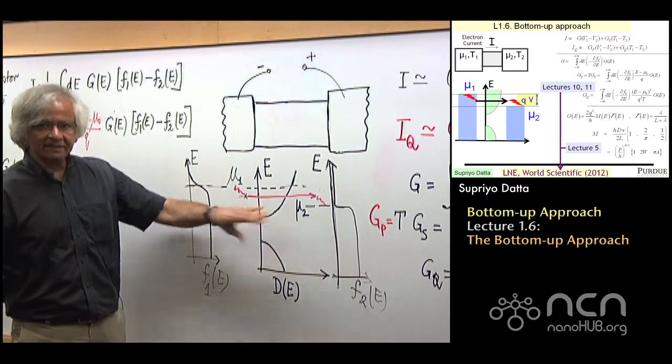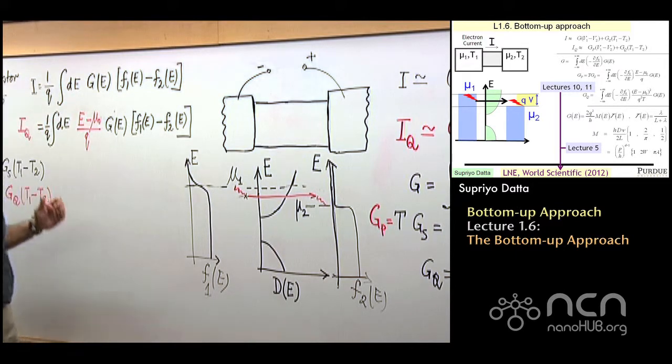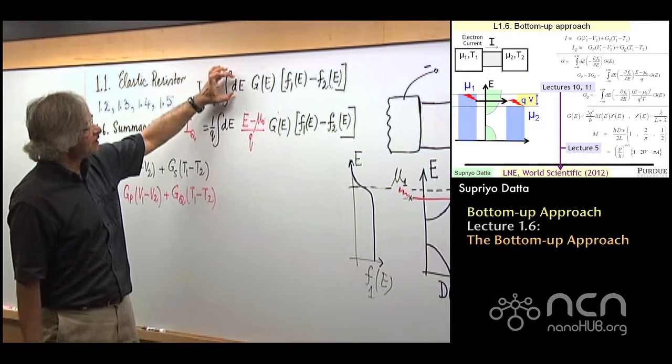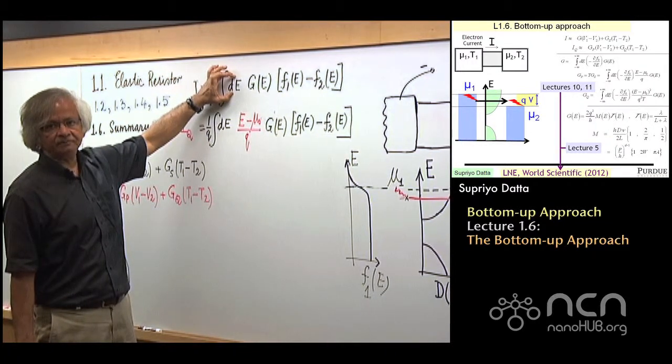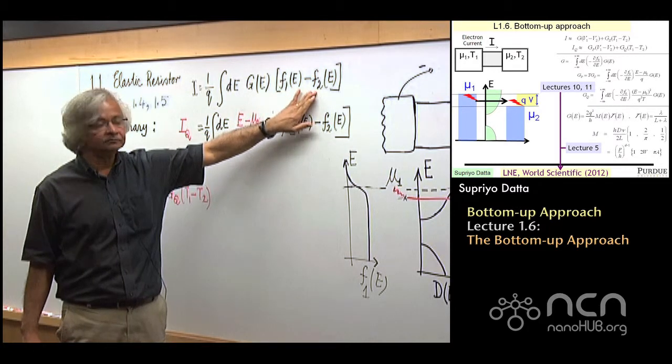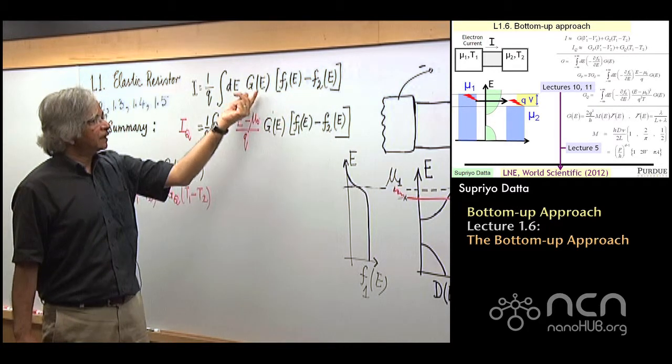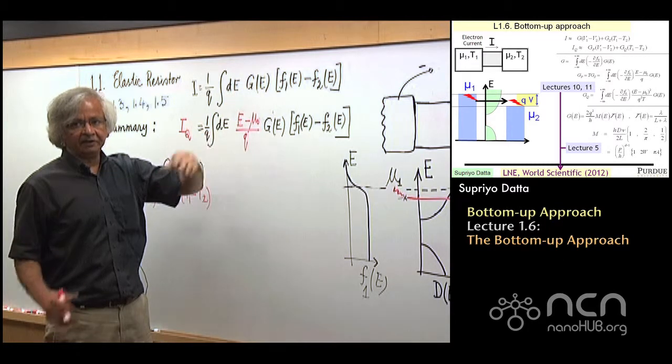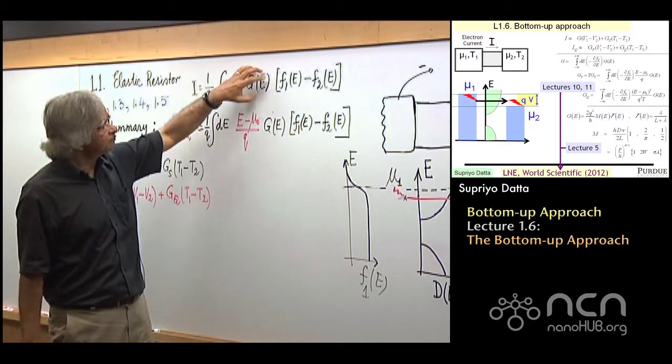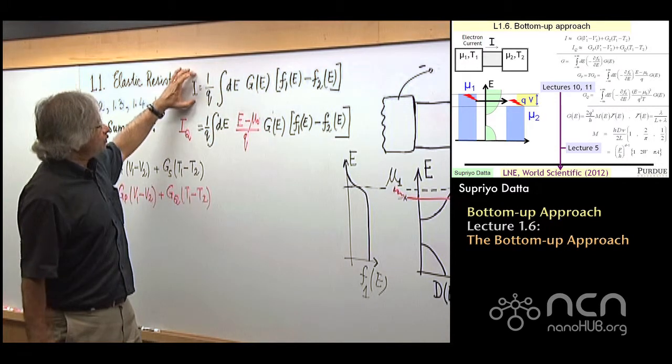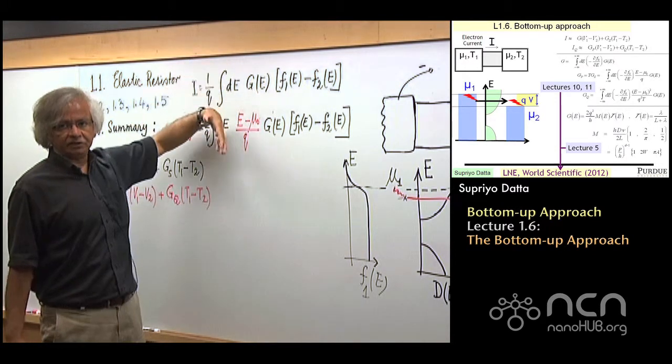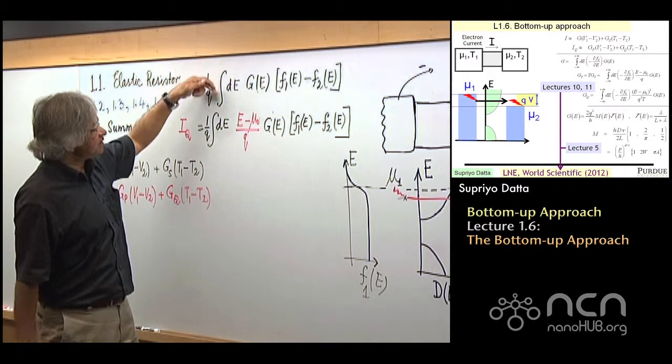Now the basic idea, if you remember, we are talking about this elastic resistor. We think of electrons going through the channel without exchanging any energy. The idea is that all the energy exchange happens at the two ends.